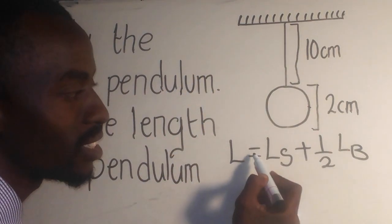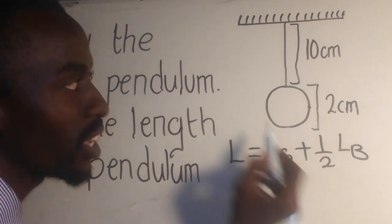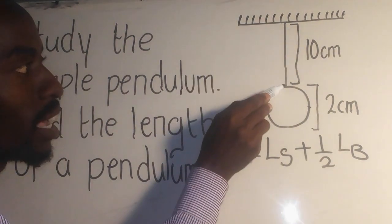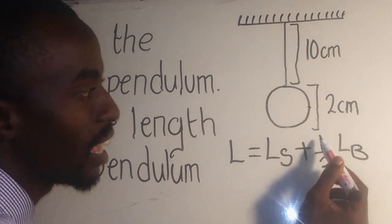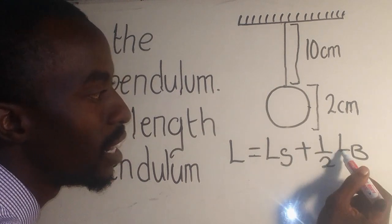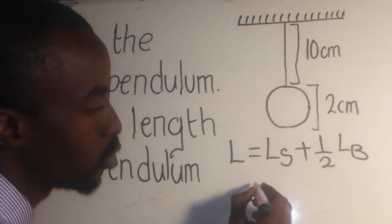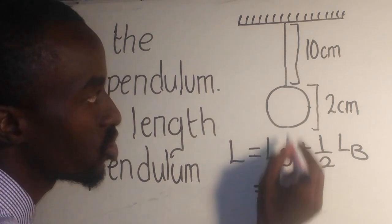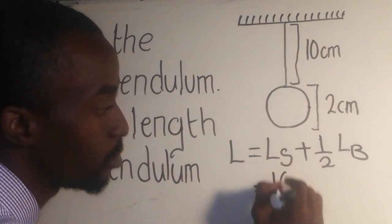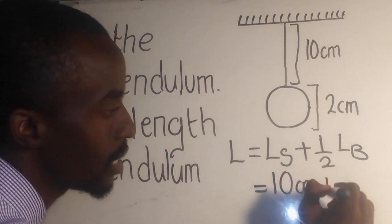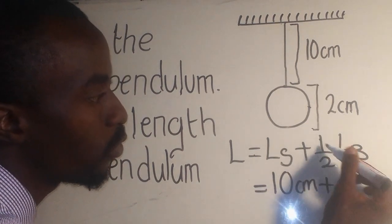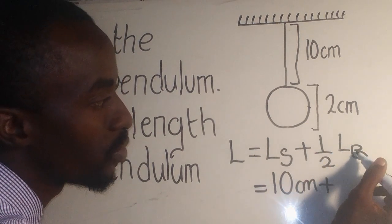So to find the length of the pendulum, we use this formula: the length equals the length of the string from here up to here, plus half the length of the bulb. Length of the string, we are given, is 10 centimeters. So 10 centimeters plus half of the length of the bulb.